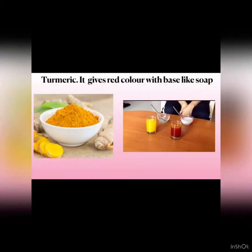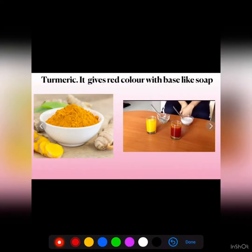Turmeric also acts as an indicator. It gives yellow color with acids — meaning it does not change its color, as turmeric is itself yellow. When it is mixed with bases, it gives a red color.